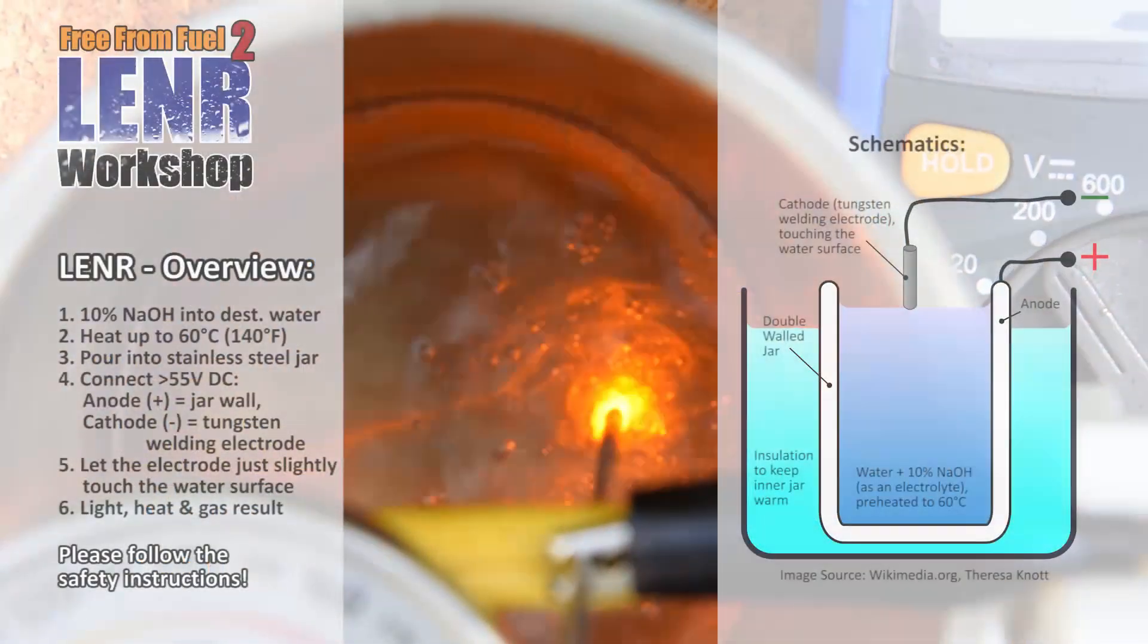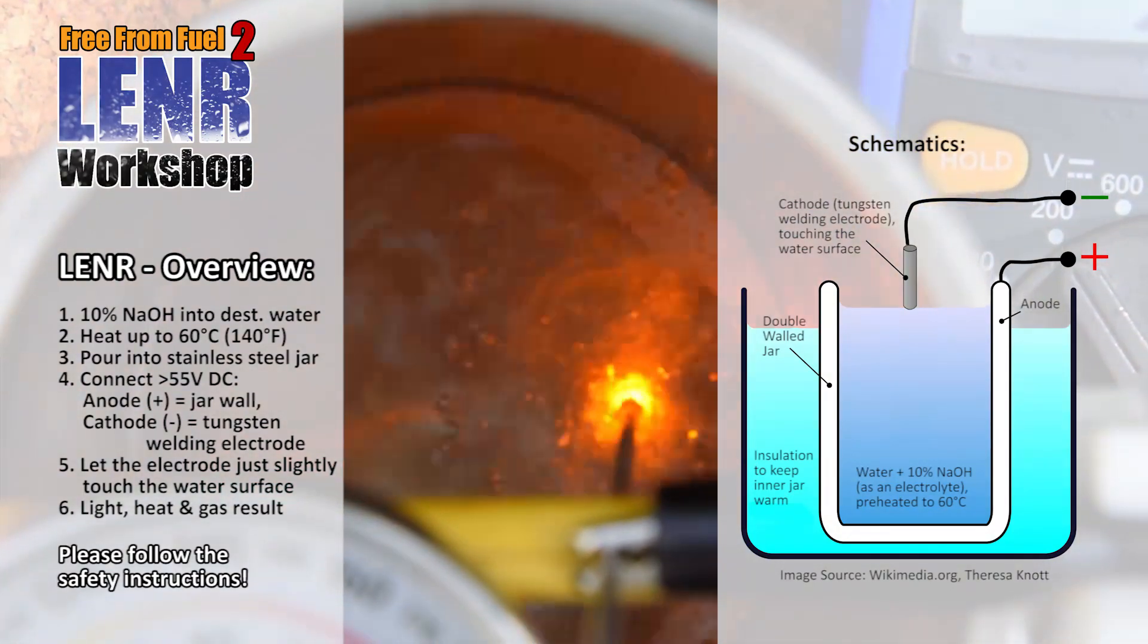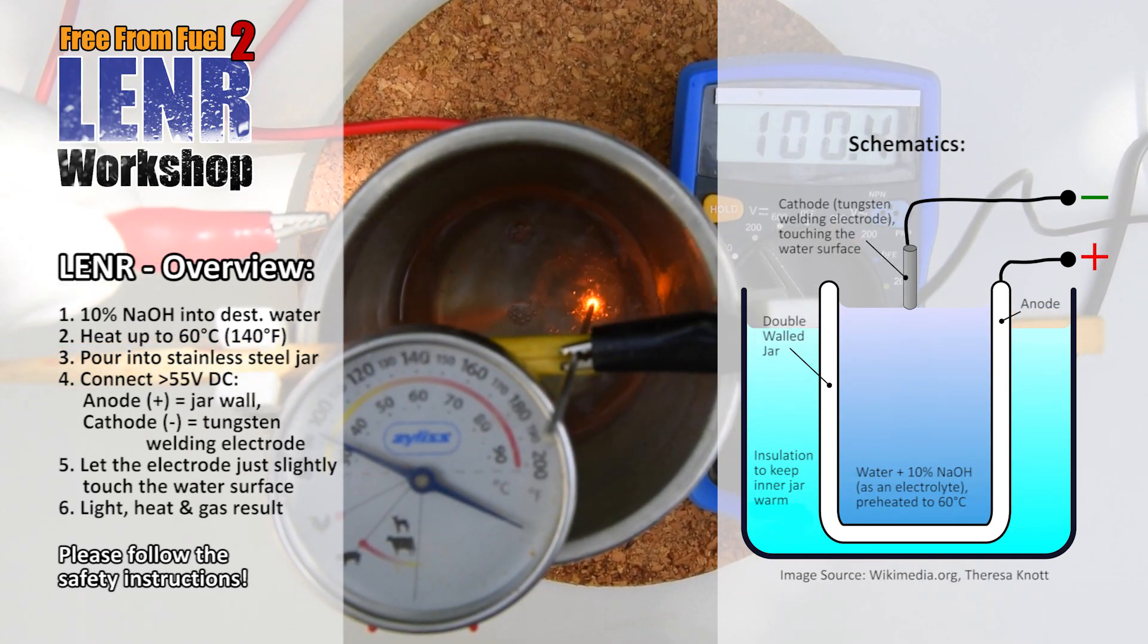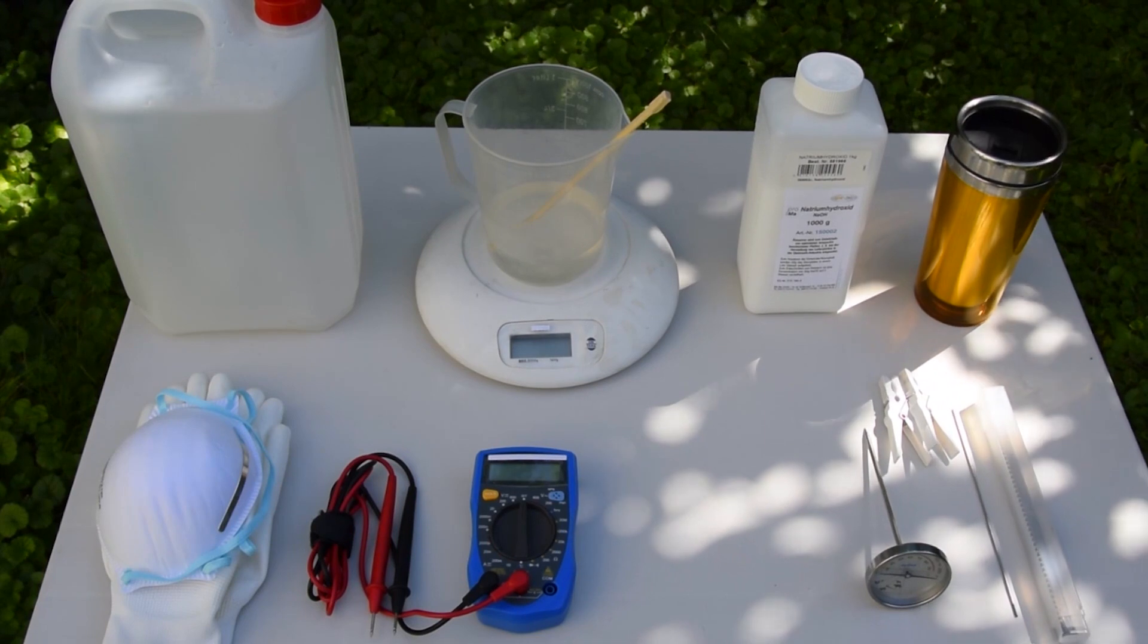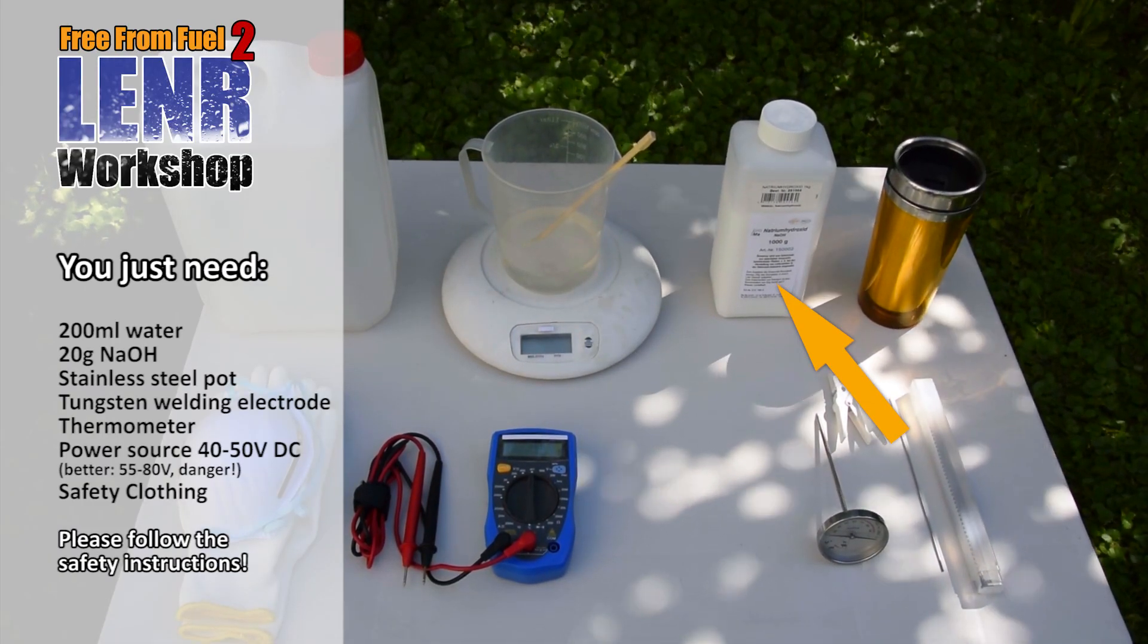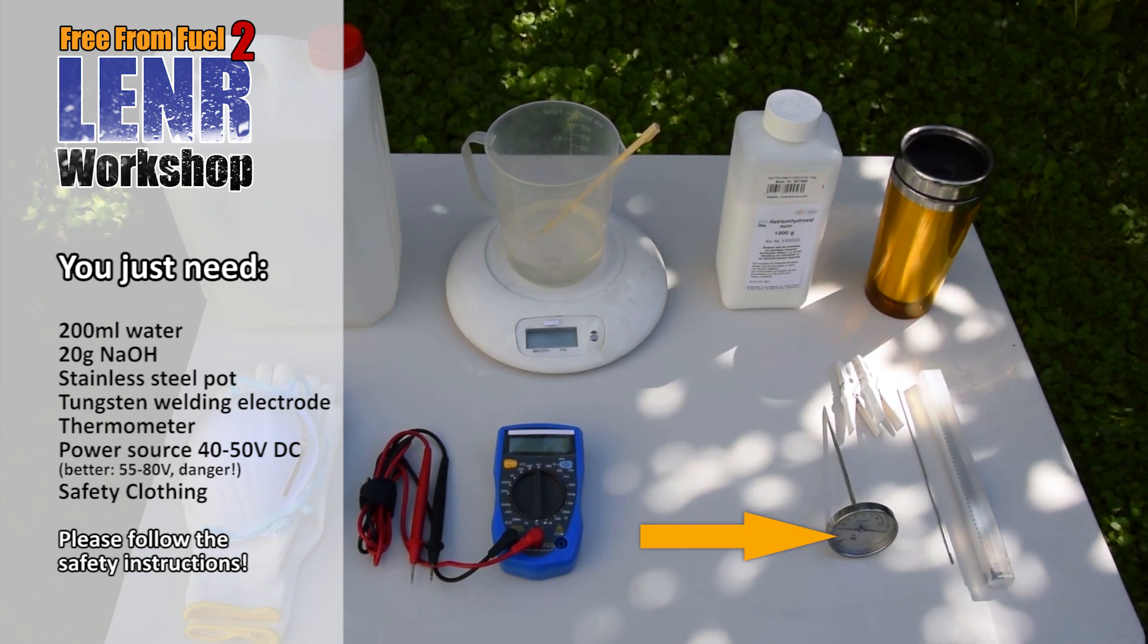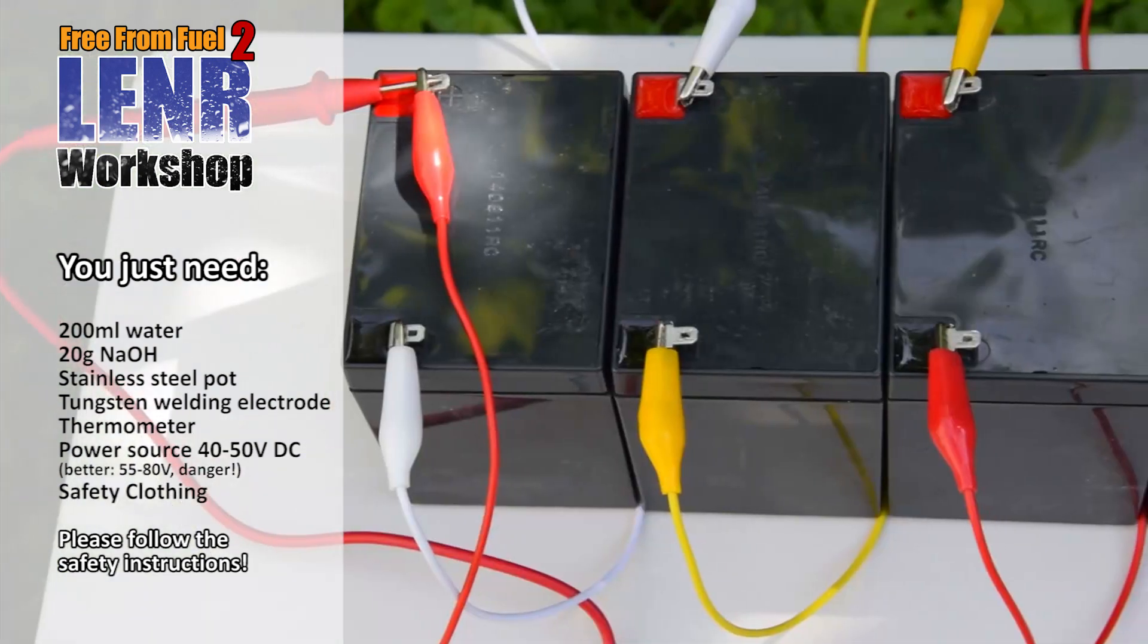Here is a quick overview. This is the most important part of this video here. Press the pause button, stop the video, make a snapshot and save this screenshot. This is all you need: 200 ml of water, 20 g of sodium hydroxide, a stainless steel mug or pot, a tungsten welding electrode, a thermometer, and an AC power source of at least 40 to 50 volts.